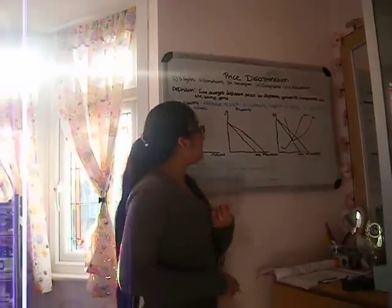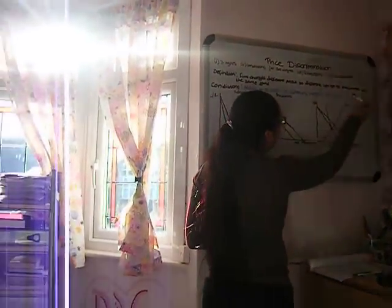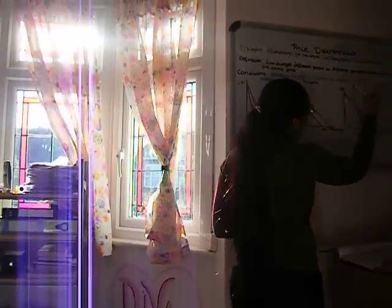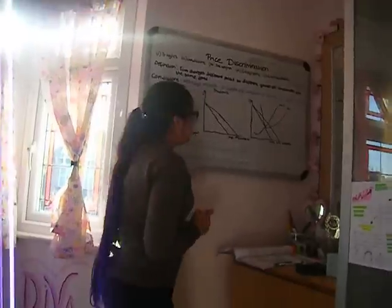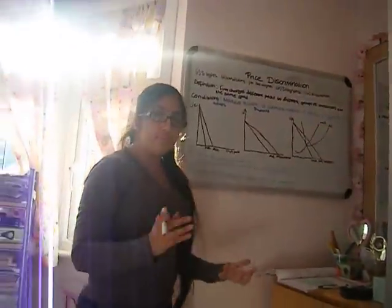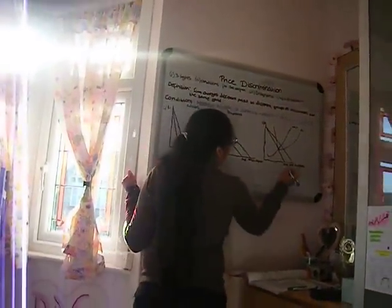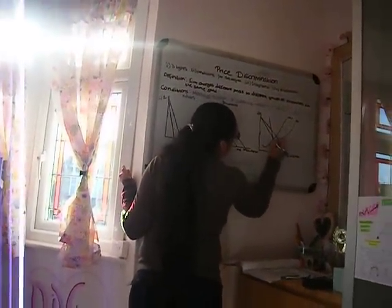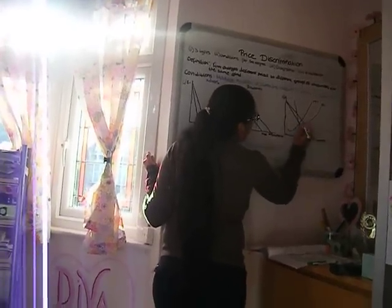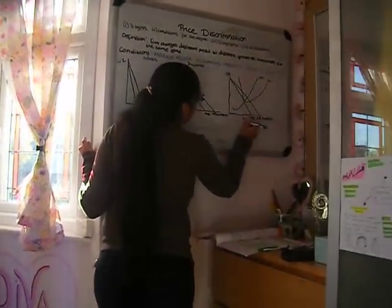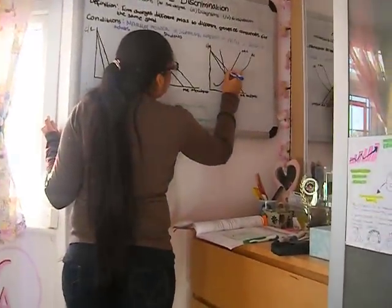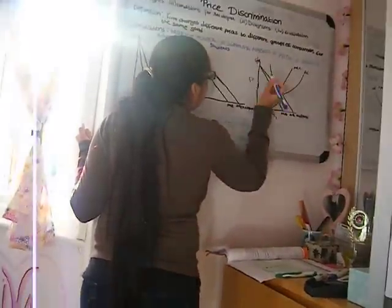And this is Vue Cinema's cost curve. We have the marginal cost, marginal revenue, average revenue, and average cost. Now, they're a profit maximizing firm. They work at marginal revenue equals marginal cost, this point right here. So this is their quantity. And the price would be, they go up to demand and that's their price.